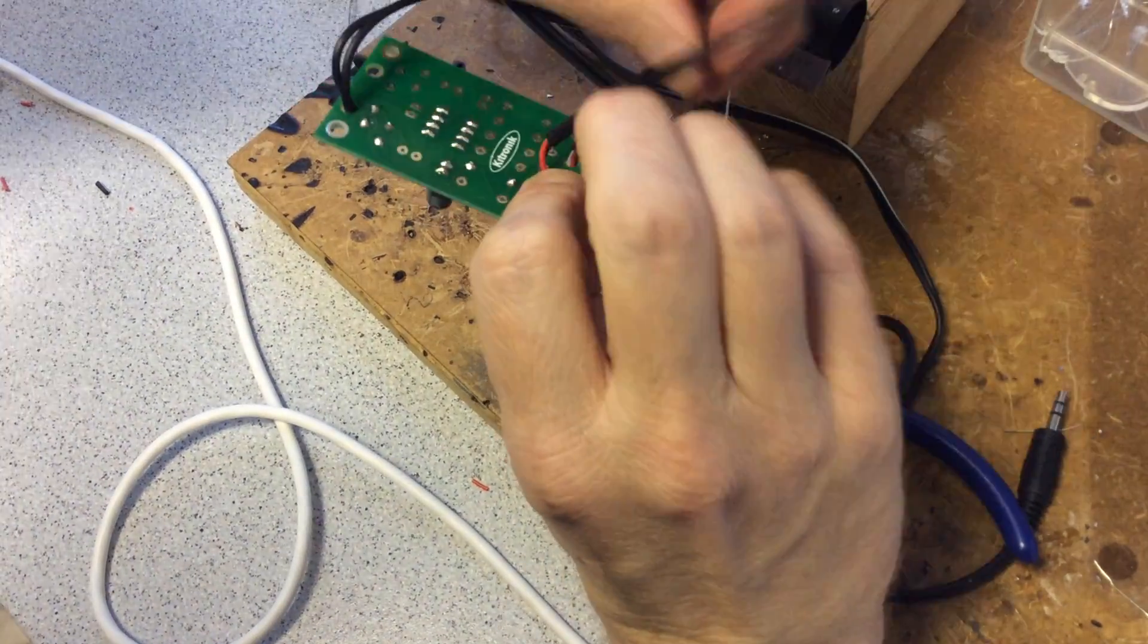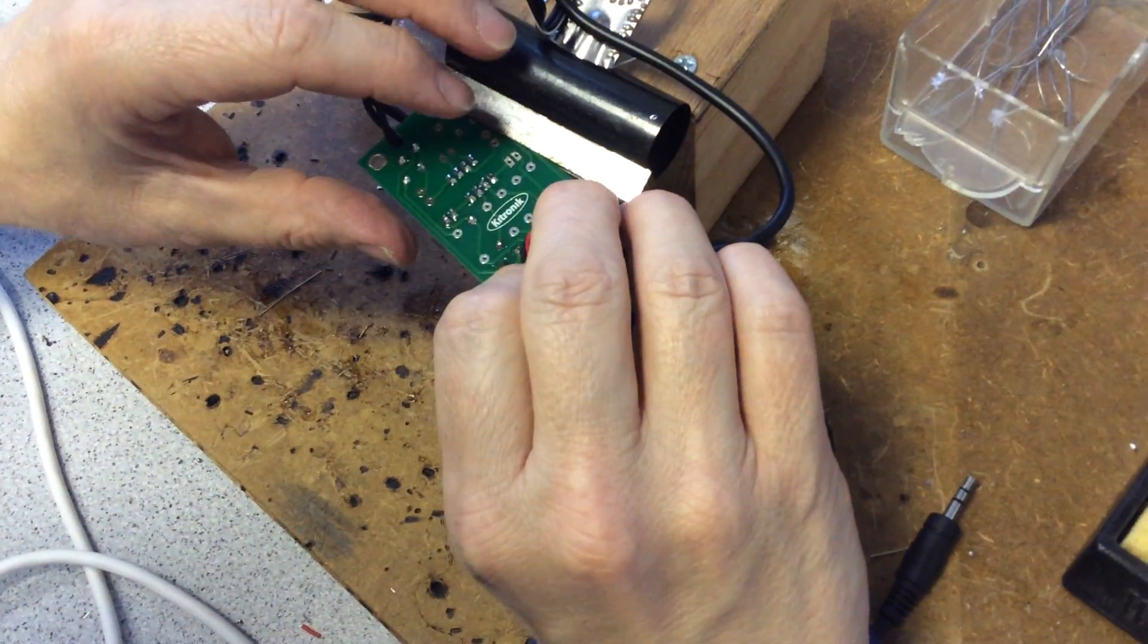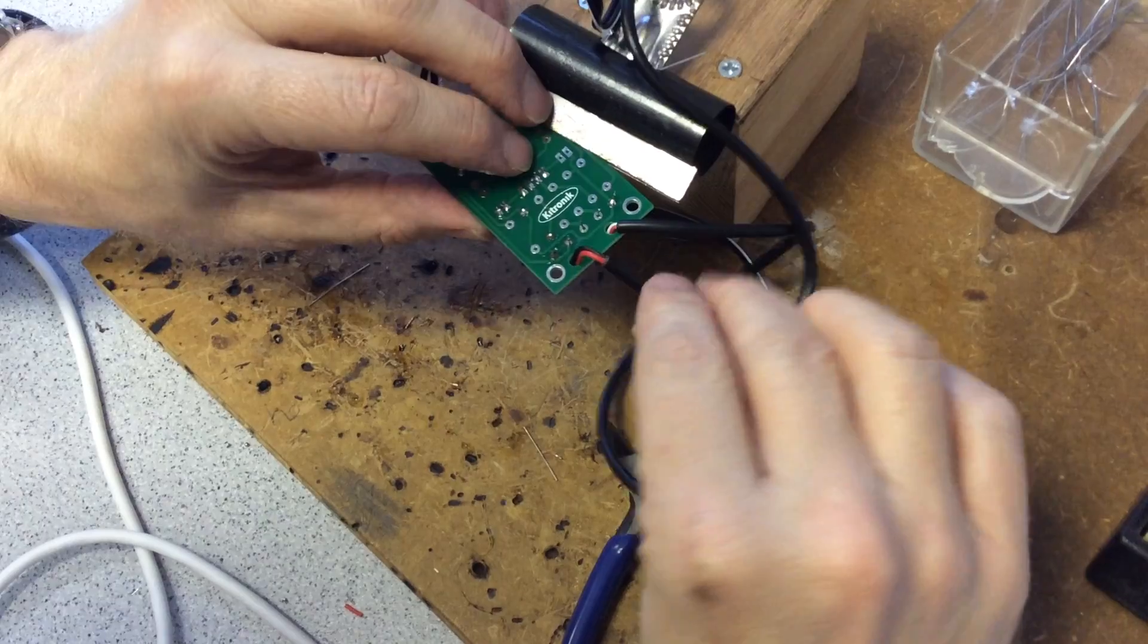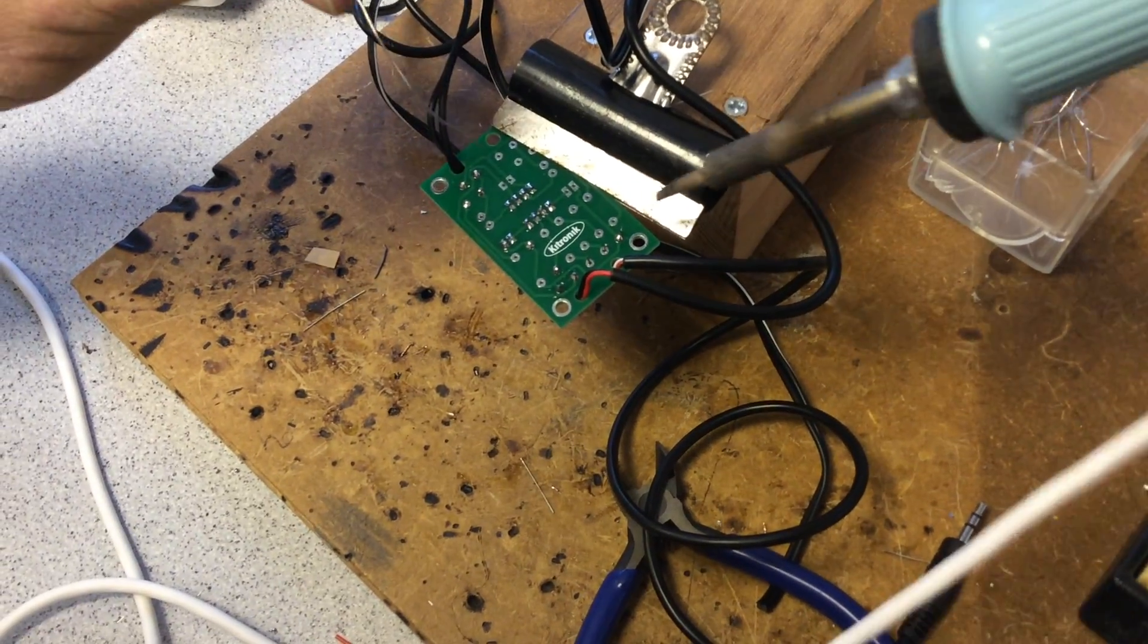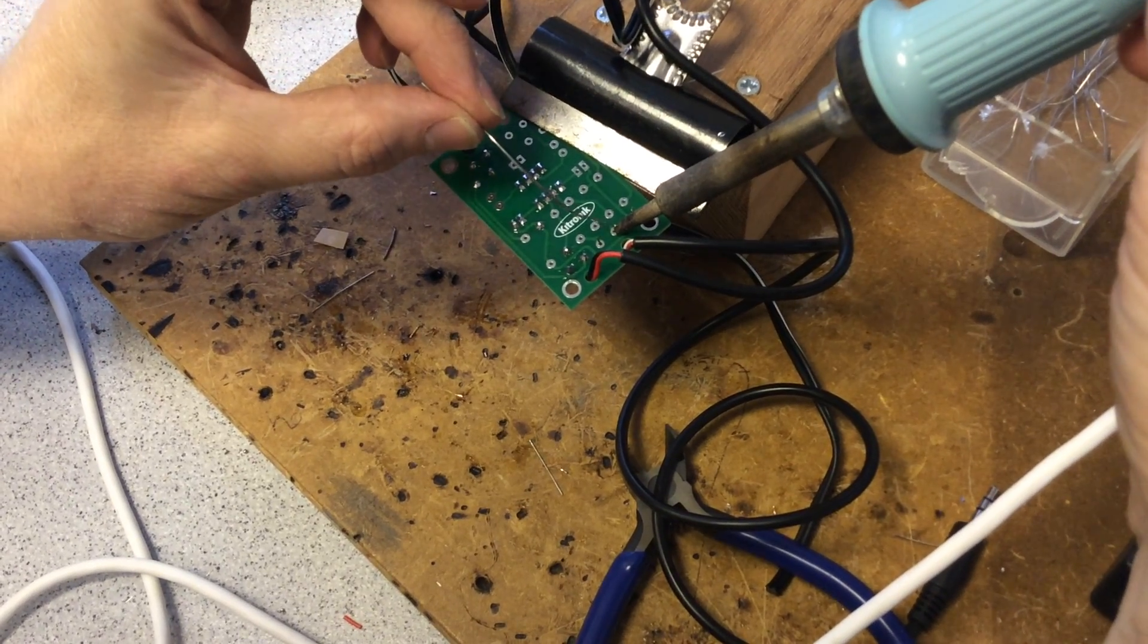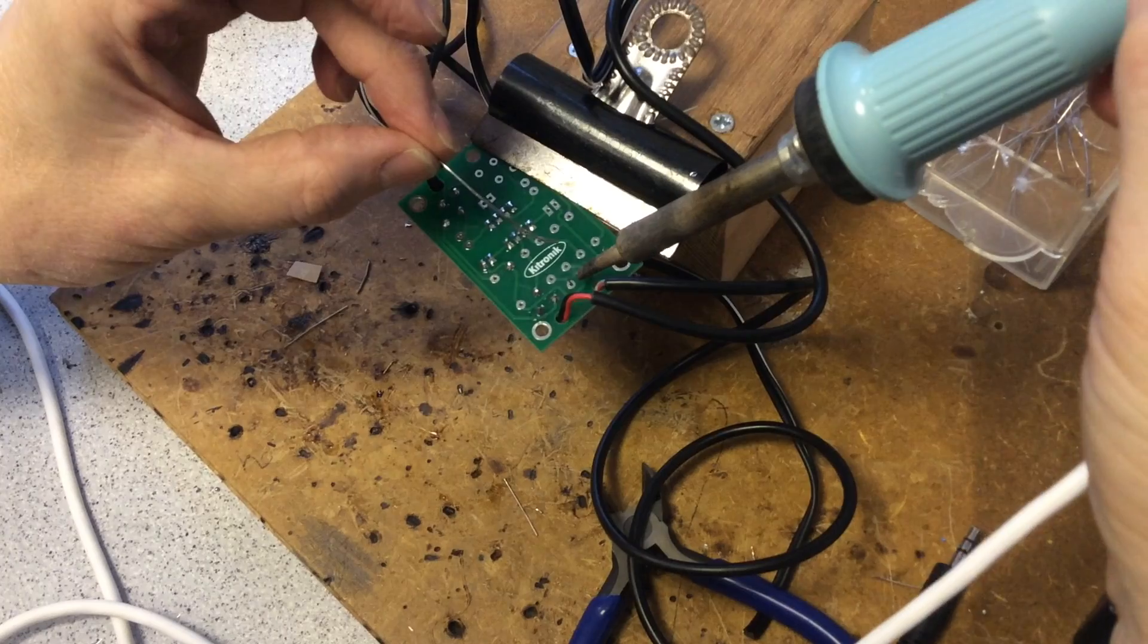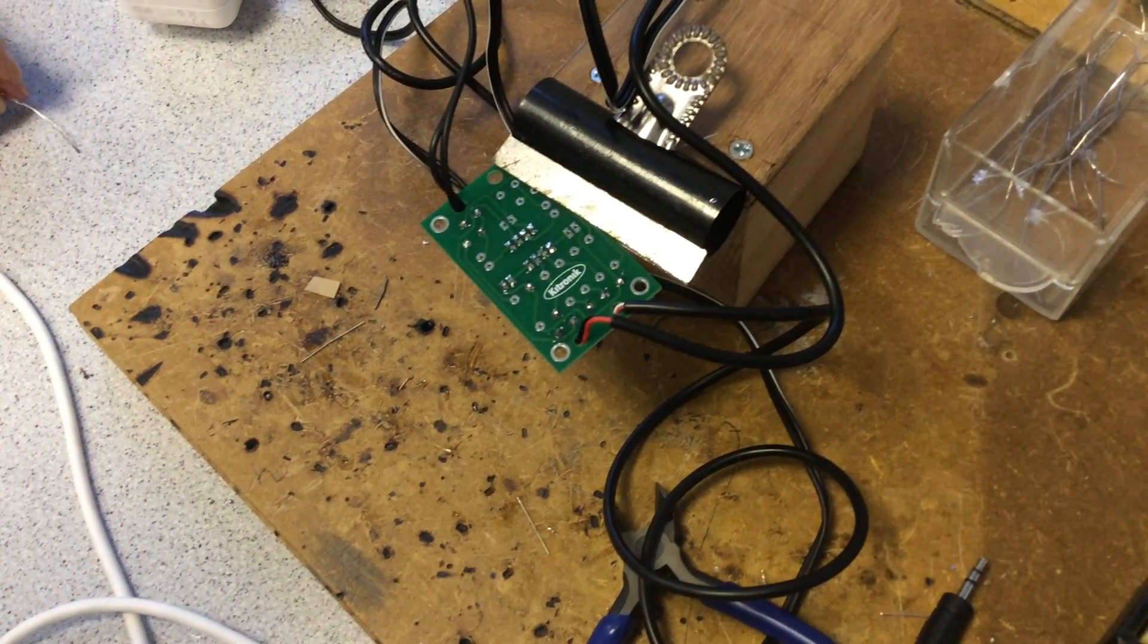So just gets a bit fiddly now, because you've got lots of things soldered on, but we go like that, and this thing's in the way, so just be mindful not to burn any of the wires. Position your soldering iron so you're not burning any of the wires you've already soldered on. There we go, that's all done.